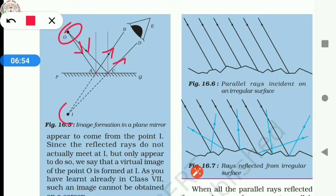Mark that point as I. For a viewer at E, do the reflected rays appear to come from the point I? Since the reflected rays do not actually meet at I, but only appear to do so, we say that a virtual image of the point O is formed at I.